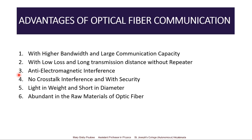Optical fibers have anti-electromagnetic interference — they are immune to any electrical interferences, such as in areas with high voltage fluctuations or thunderstorms. It is very suitable to use optical fibers for communication in such environments. They do not have any cross-talk interference and they have high security. Since optical fibers are immune to electrical interference, there can be no cross-talk between different cables — one cable cannot pick up the signal from another, even if the cables are nearby.